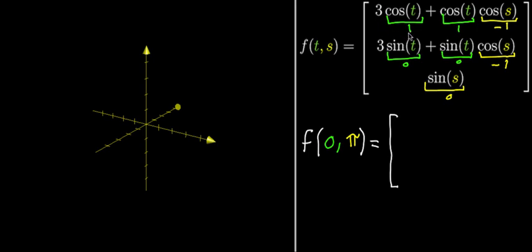So the top is three times one plus negative one. One times negative one is negative one, and we get two. Then we have three times zero plus zero, so the y component is just zero. And then the z component is also zero.